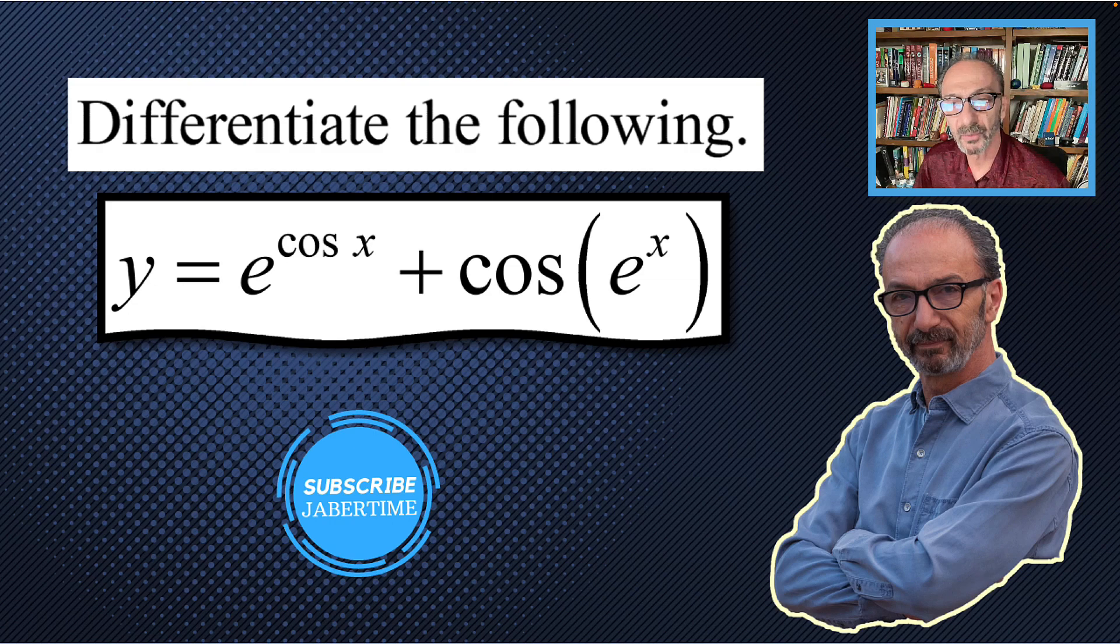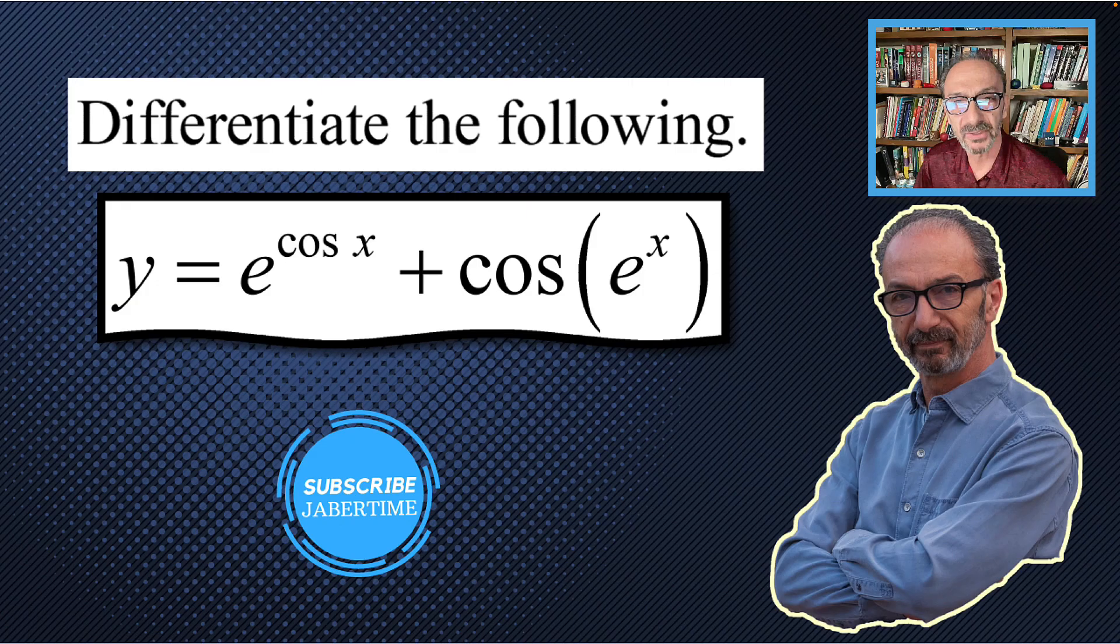Differentiate the following: y equals e to the power cosine x plus cosine e to the x.